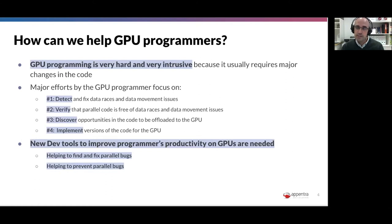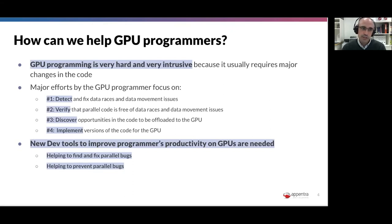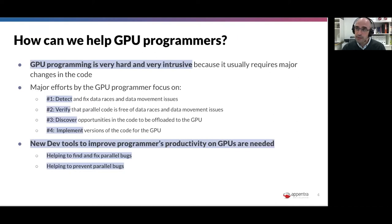Once you add parallelism, you need to verify that the code runs correctly — that is effort number two. Effort number three is discovering parts of the code that are still sequential and represent opportunities to add more parallelism. This is usually hard in real applications because you need comprehensive knowledge of your code, data structures, class design, and how computations process those structures. Finally, effort number four is implementing the parallelization in a way that speeds up the application.